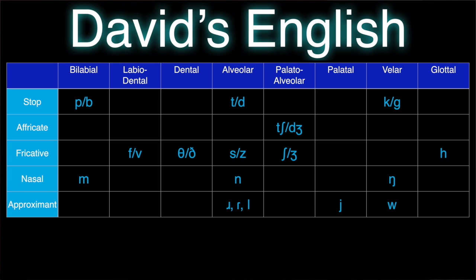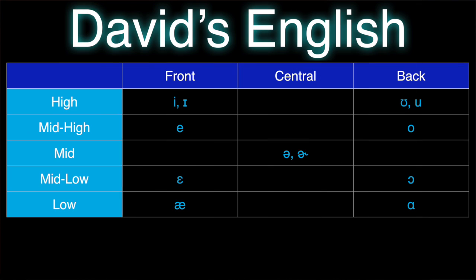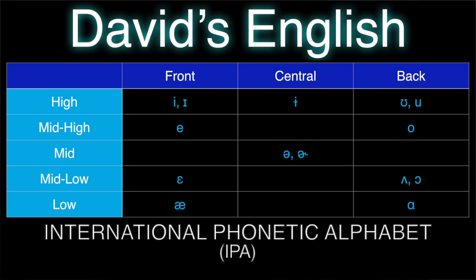This is every single consonant that is used in my version of English, or if you want to get technical, these are every single consonant that I use when I'm speaking English, at least for making meaning distinctions. Turning our attention to the vowels, here are all the vowels that I use in English — or if you're a real stickler, here are all the vowels that I use in my English. These characters are a part of the International Phonetic Alphabet, so if you'd like to hear their sounds, click the link and go over to Wikipedia to get a really basic intro to it.